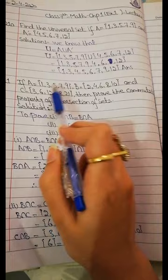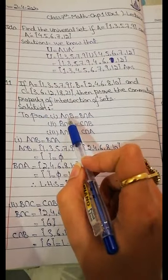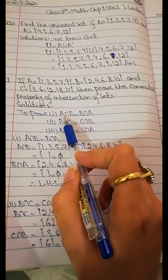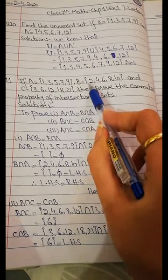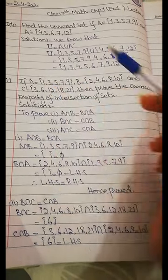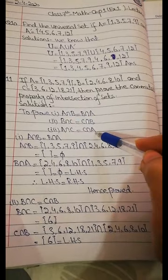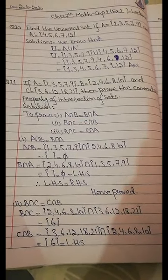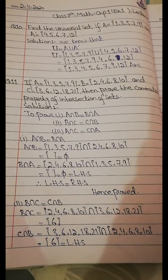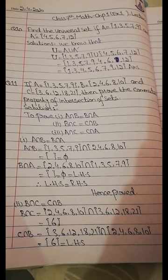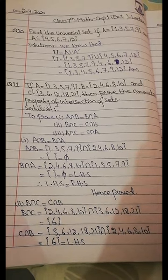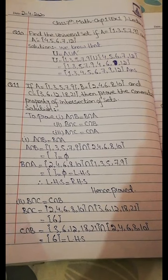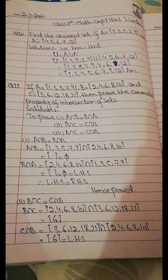Taking these two sets with respect to commutative property of intersection of sets: A intersection B equals B intersection A. When we take B and C sets, B intersection C equals C intersection B. And if we take A and C, A intersection C equals C intersection A. To prove this, take the left-hand side and right-hand side, find each answer, and check if both are equal — that proves the commutative property of intersection of sets.